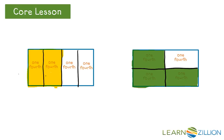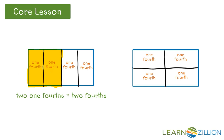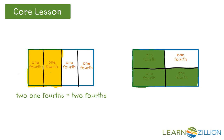Now for the next one, the whole is again partitioned into fourths because I have four equal shares. So now I need to count the unit fractions of my fourths. How many have shading? I see one-fourth, two-fourths, three-fourths. Three-fourths of the whole are shaded.